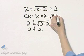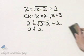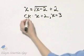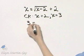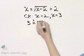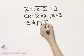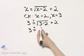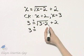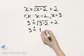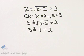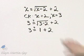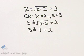Now let's check our other proposed solution, which was 3. Everywhere there's x in the original equation, we replace it with 3. Is 3 equal to the square root of 3 minus 2 plus 2? The square root of 3 minus 2 is 1, the square root of 1 is 1, and 1 plus 2 is 3. That's a true statement. Both of these check, and both are solutions.